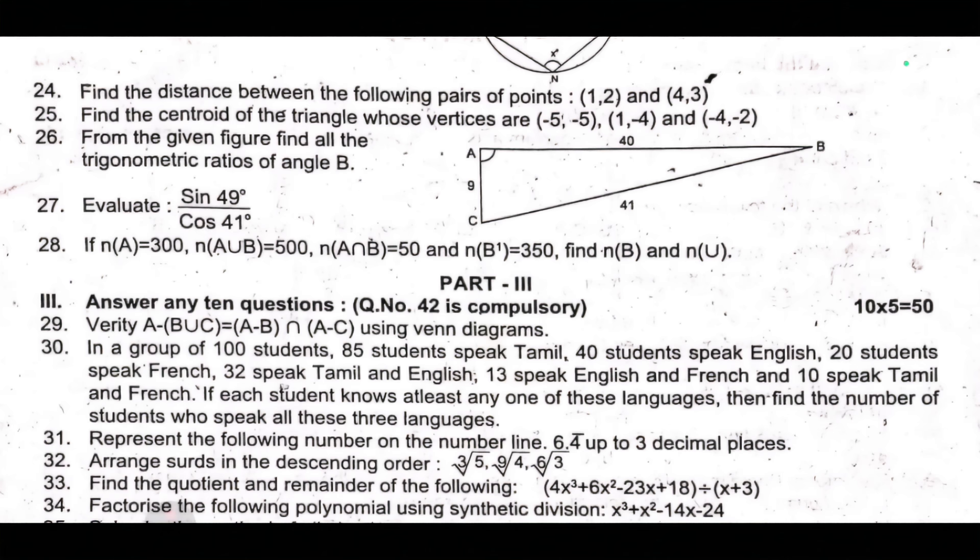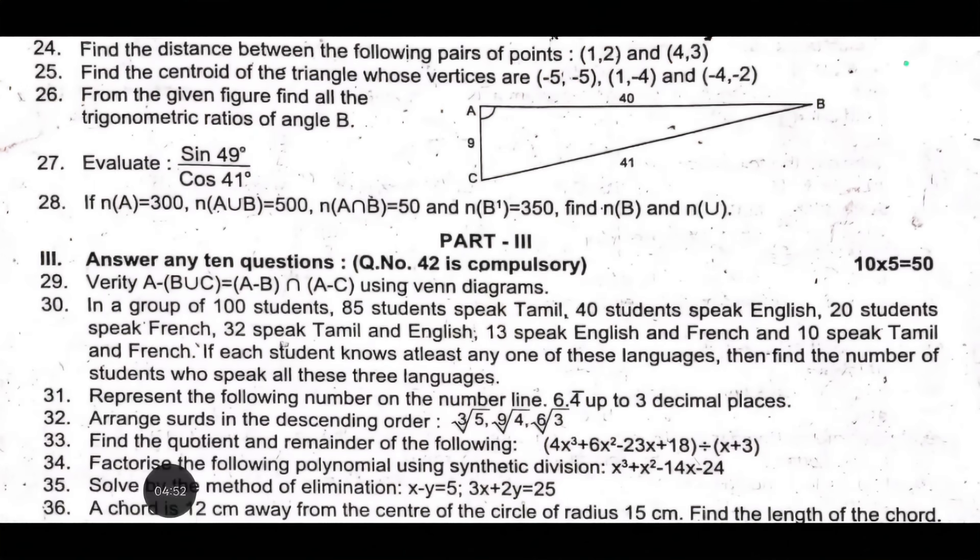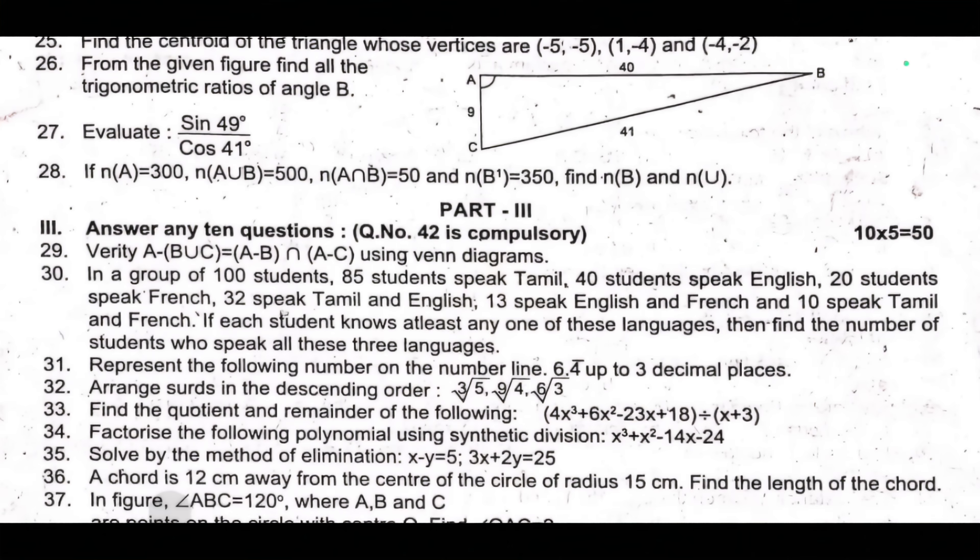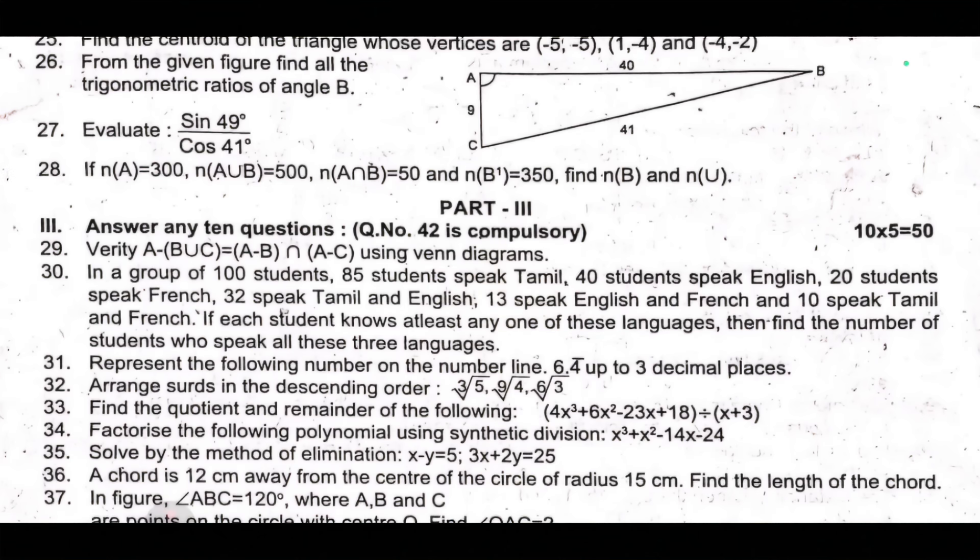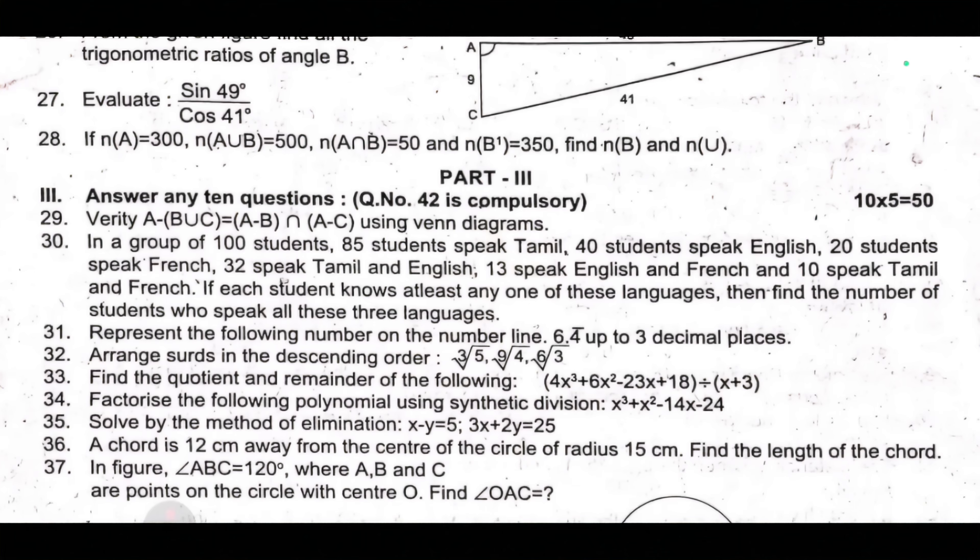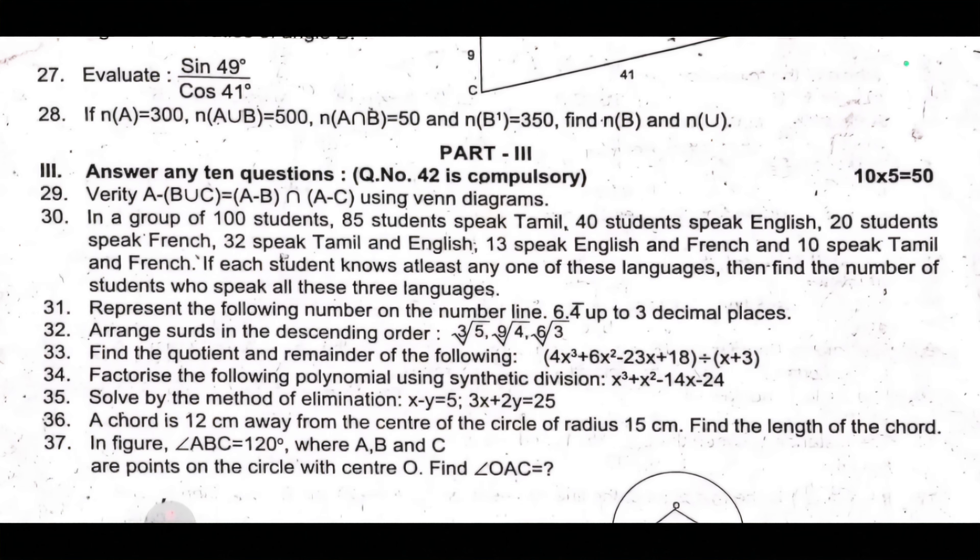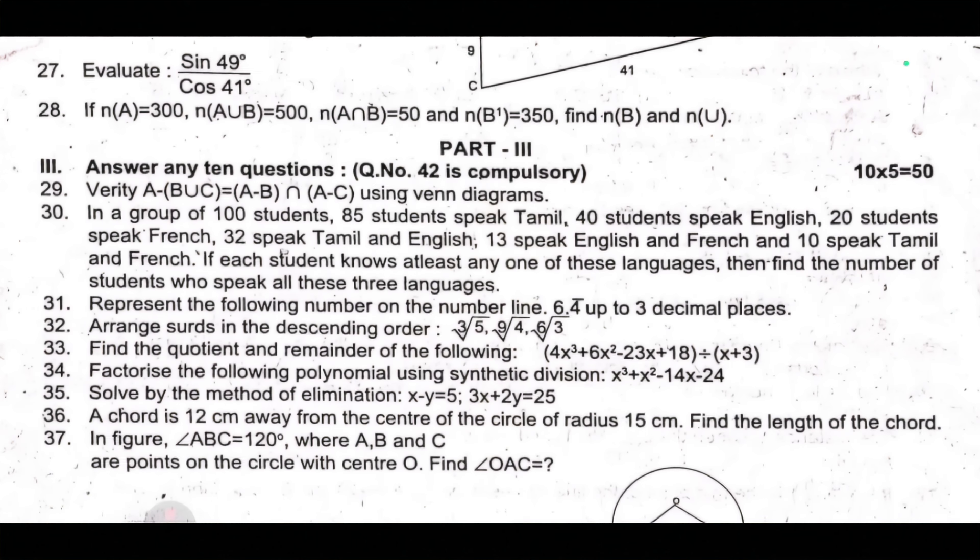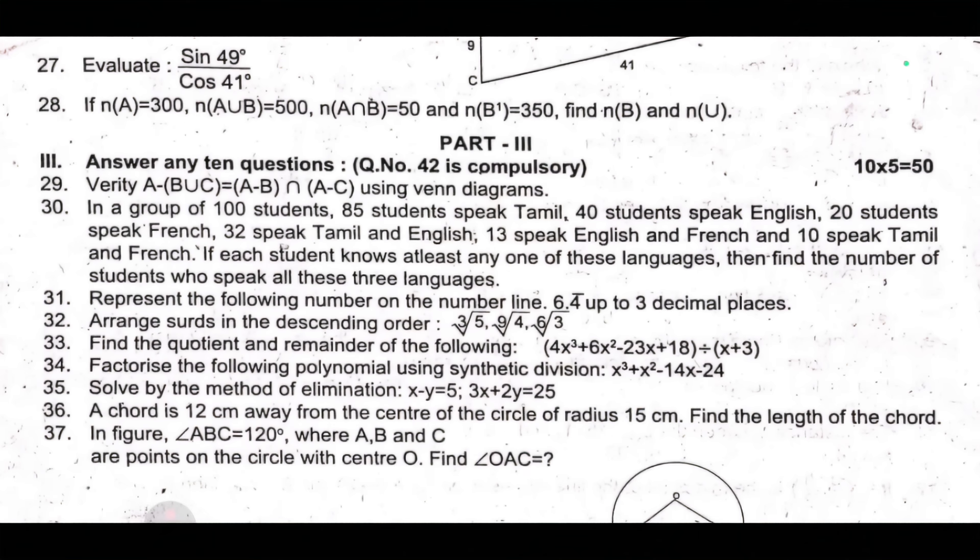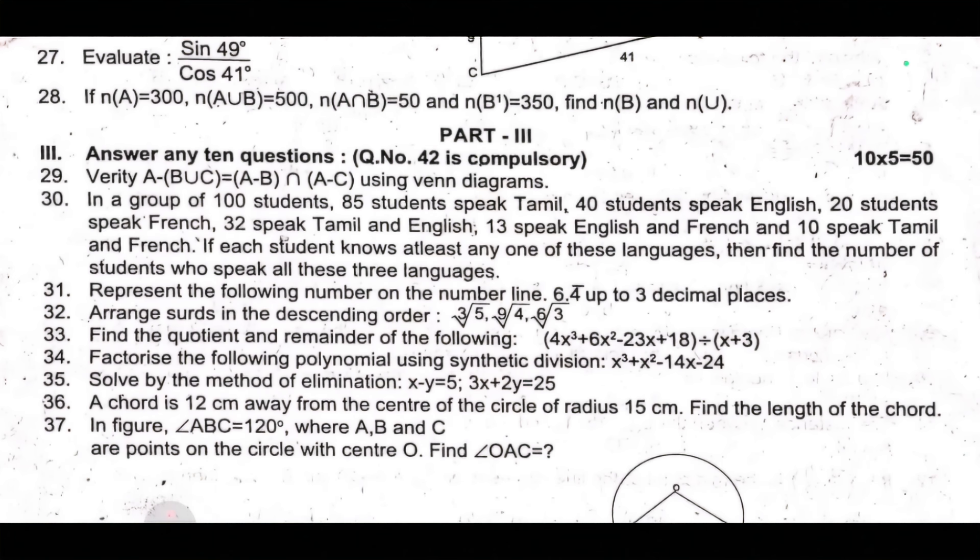If each student knows at least any one of these languages, then find the number of students who speak all these three languages. Thirty-first, represent the following number on the number line: 6.4 bar up to three decimal places. Thirty-second, arrange surds in the descending order: 3√5, 9√4, 6√3. Thirty-third, find the quotient and remainder of the following: 4x³ plus 6x² minus 23x plus 18 divided by x plus 3.